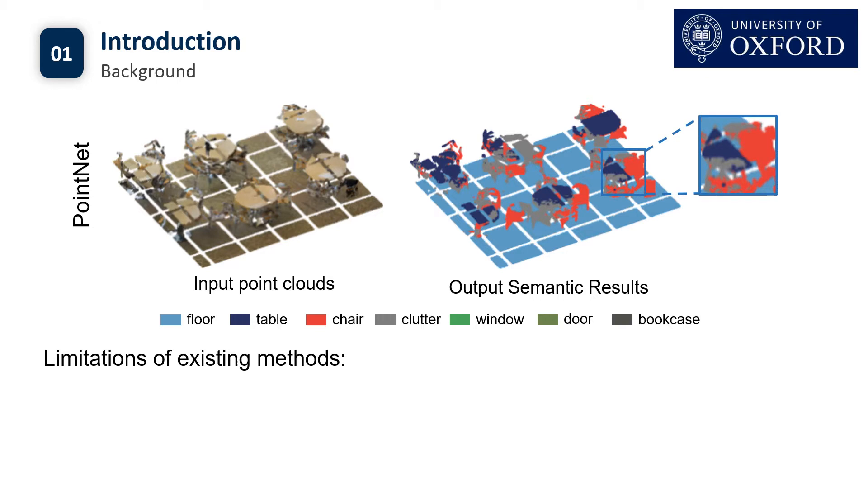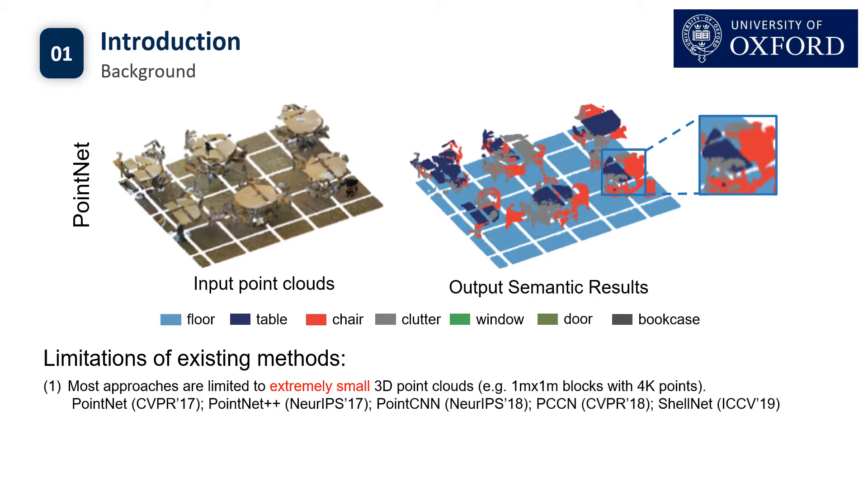There are two main limitations of existing methods. First, most approaches such as PointNet have to split the whole point cloud into several small blocks. For example, 1 meter by 1 meter blocks with 4,000 points, and then do segmentation on each individual block, which breaks the whole geometry and leads to poor performance.